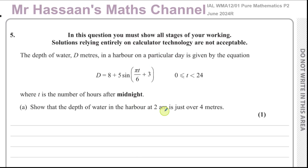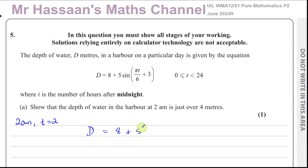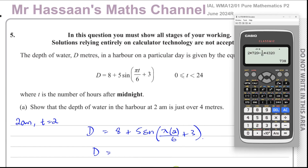Part A: show that the depth of water in the harbour at 2 a.m. is just over 4 metres. At 2 a.m., t is equal to 2 because it's 2 hours after midnight. So d = 8 + 5 × sin(π × 2/6 + 3). We just put that into our calculator — this is one mark, just replace t with 2.